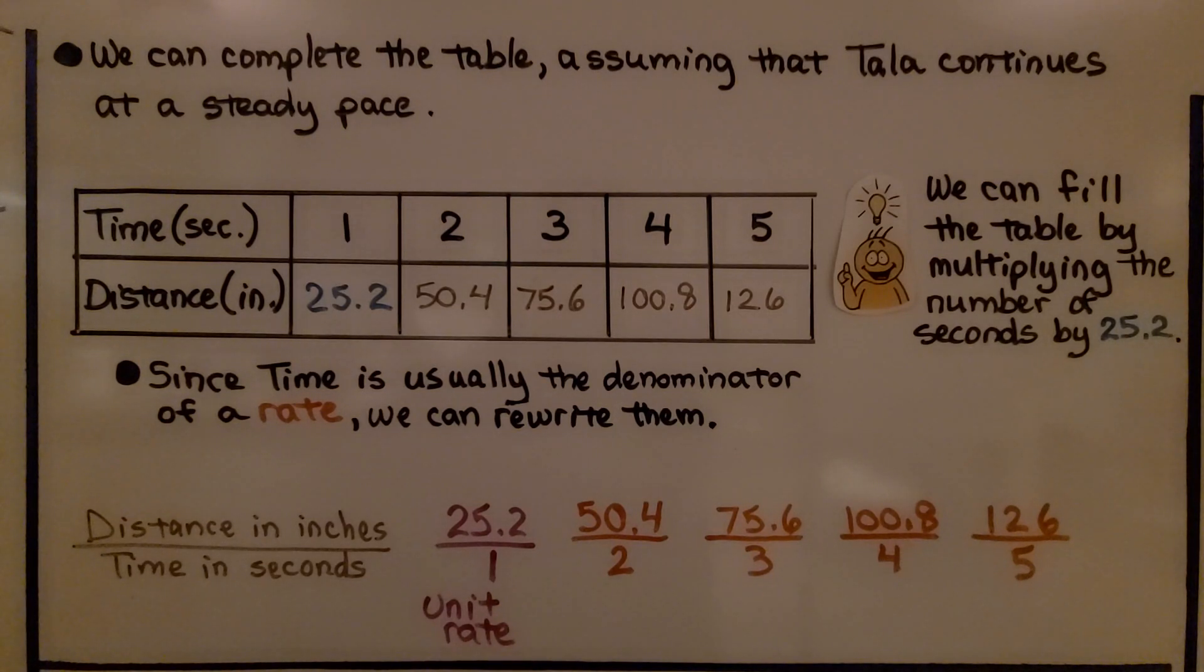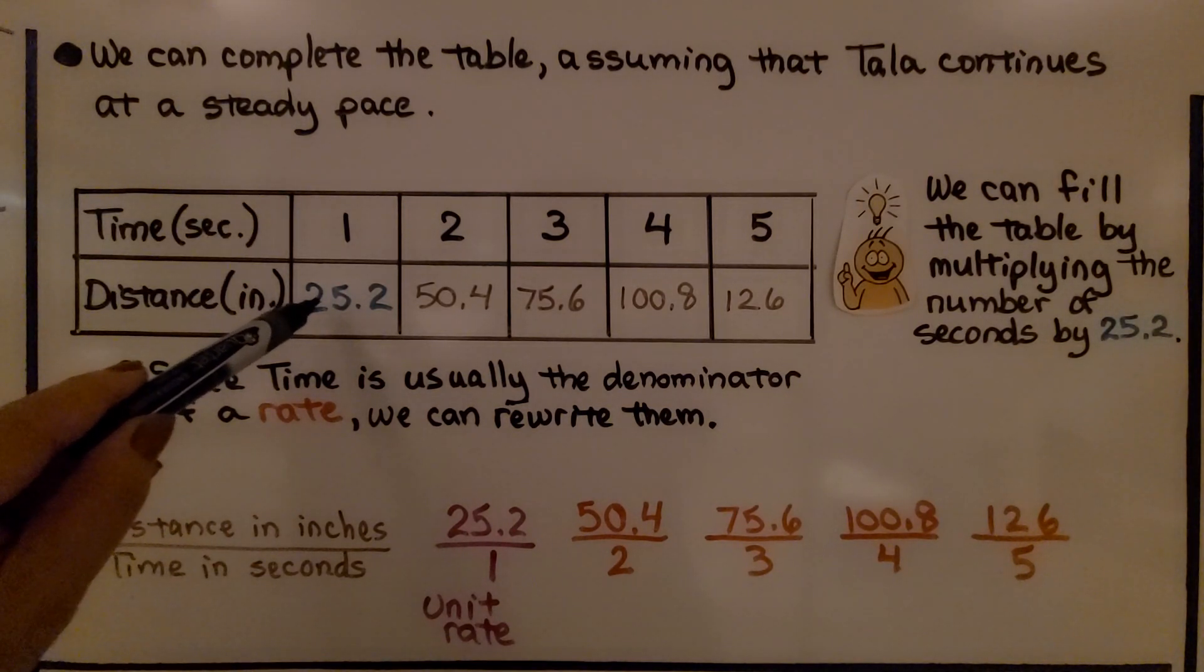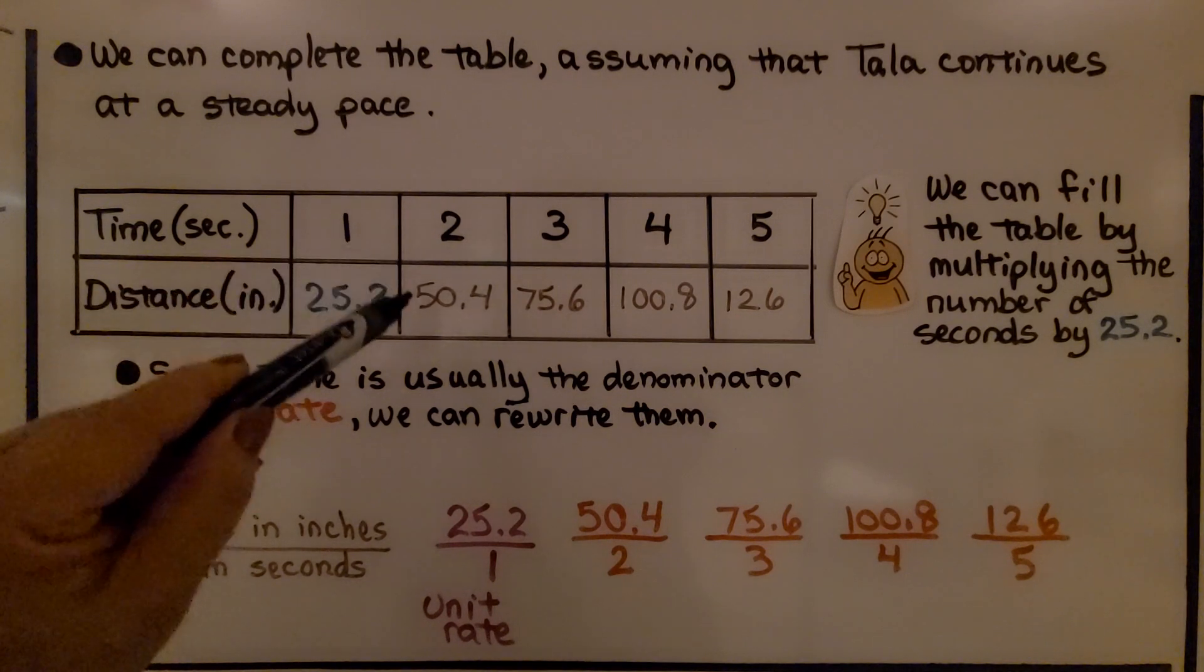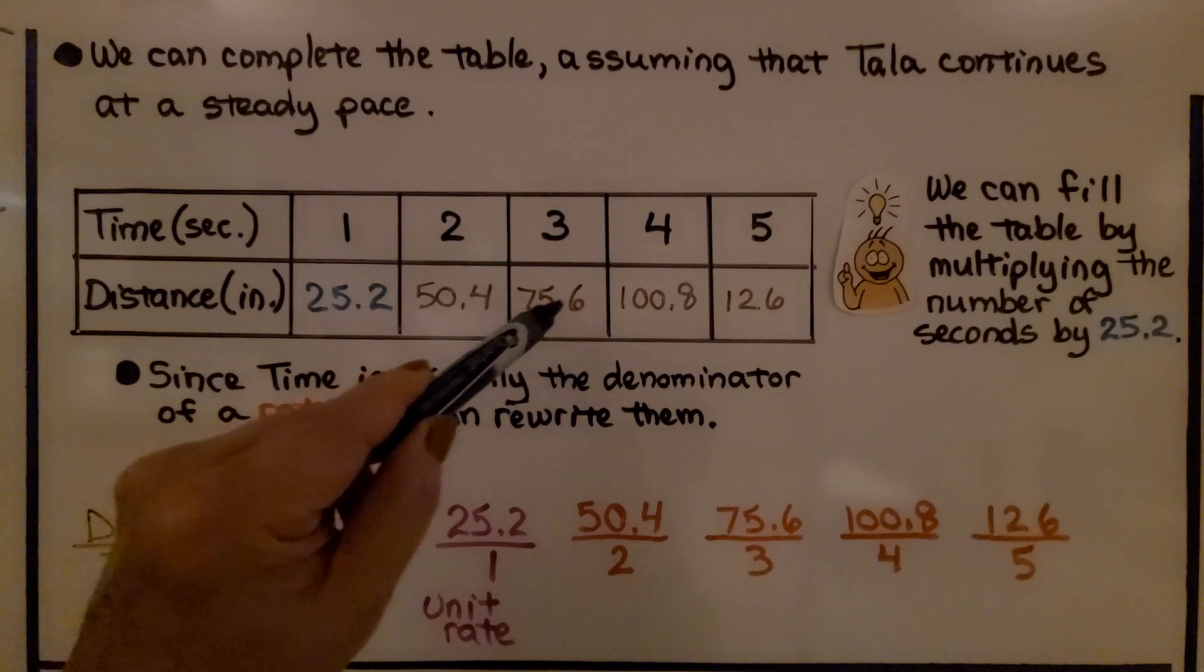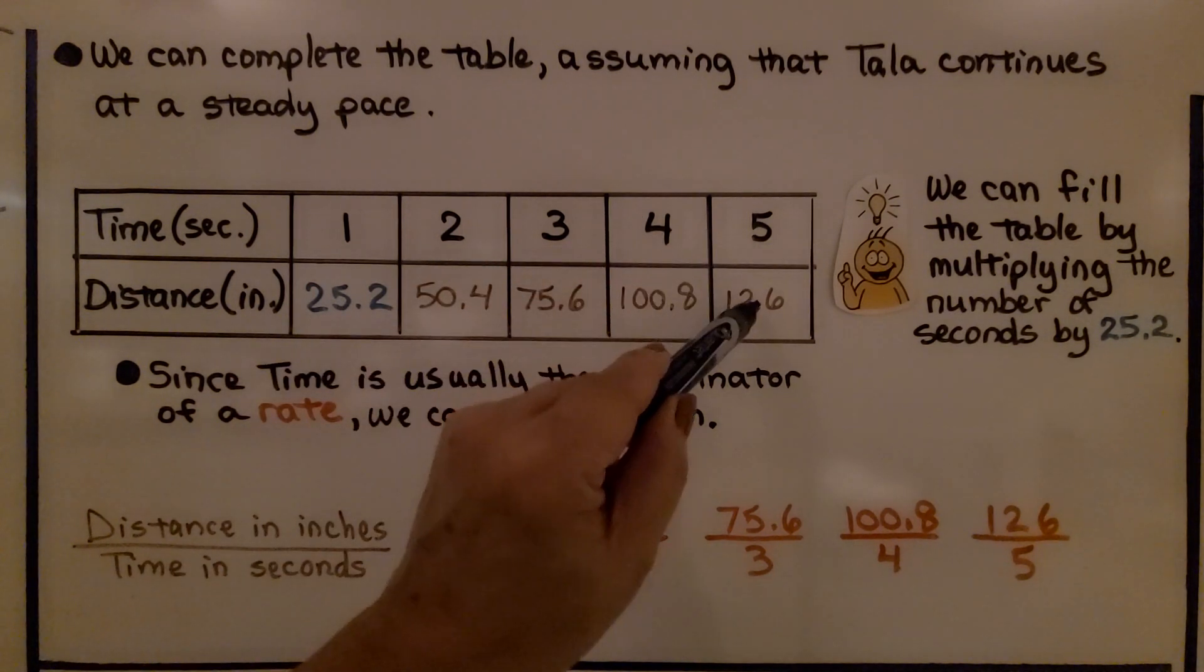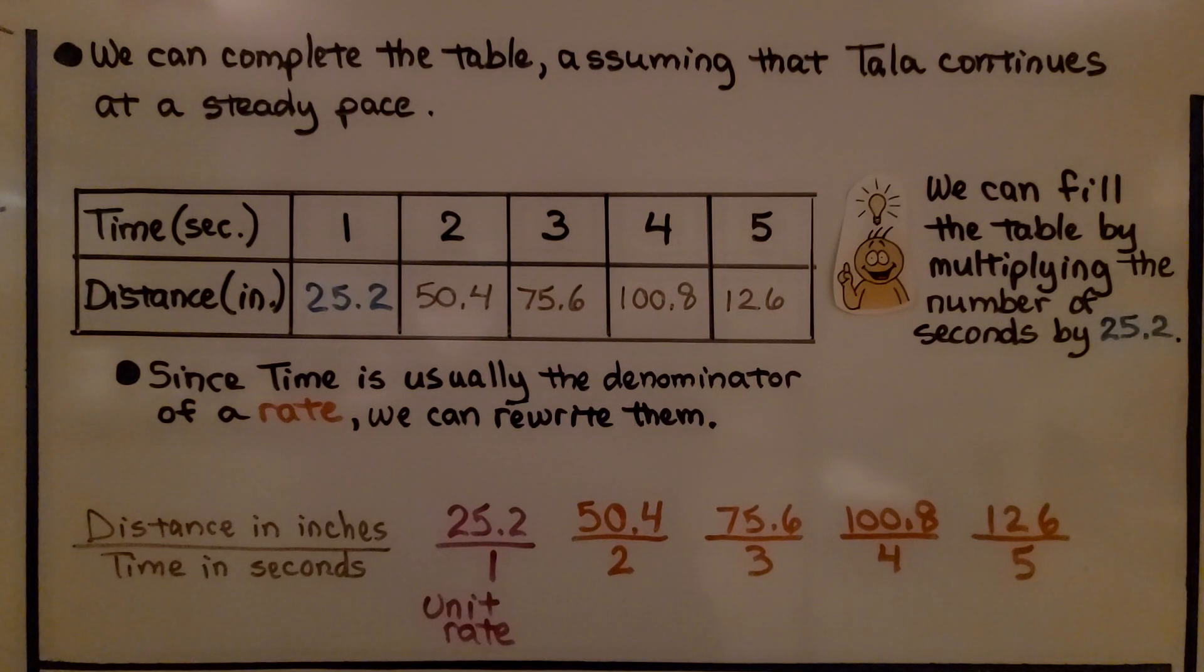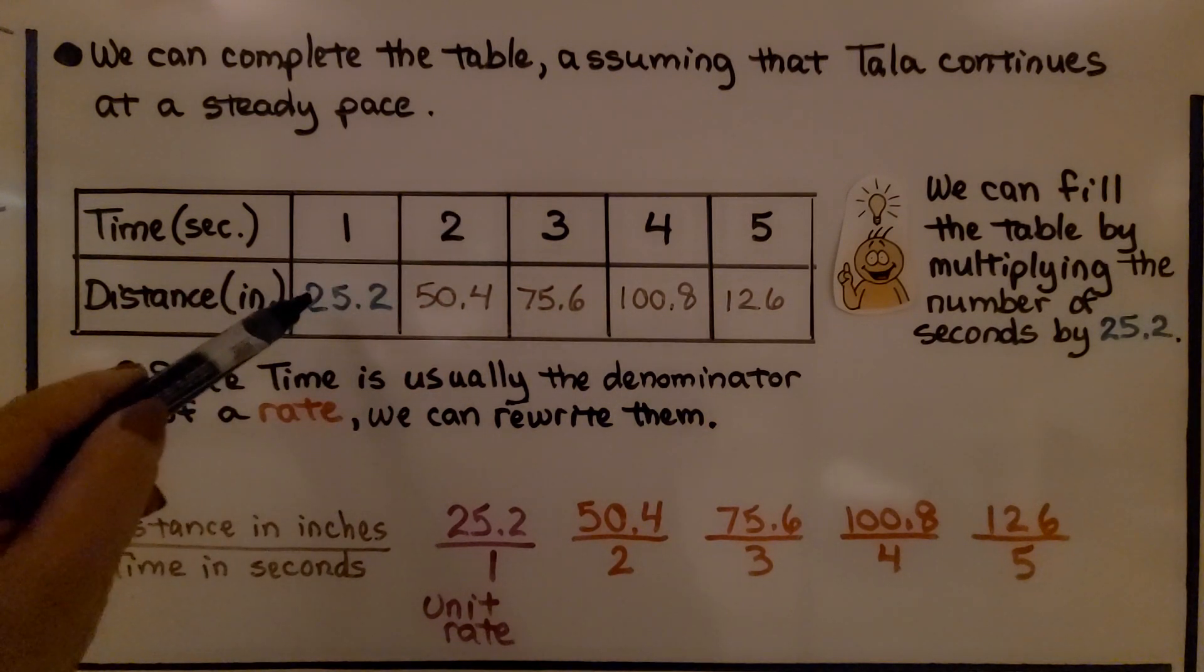We can complete the table assuming that Tala continues at a steady pace. If she walks one second, we've got 25.2. If she walks two seconds, we have 50.4. Three seconds is 75.6. Four seconds is 100.8, and five seconds would be 126.